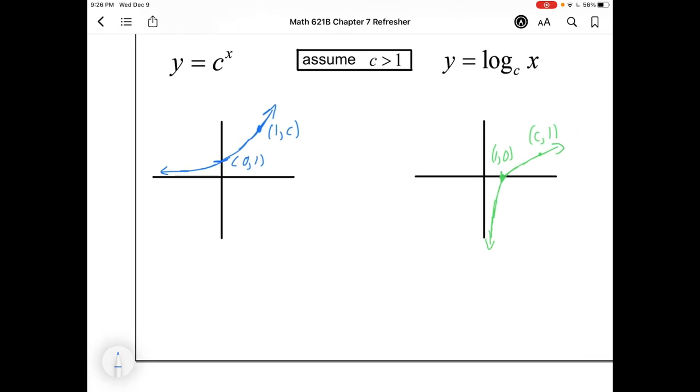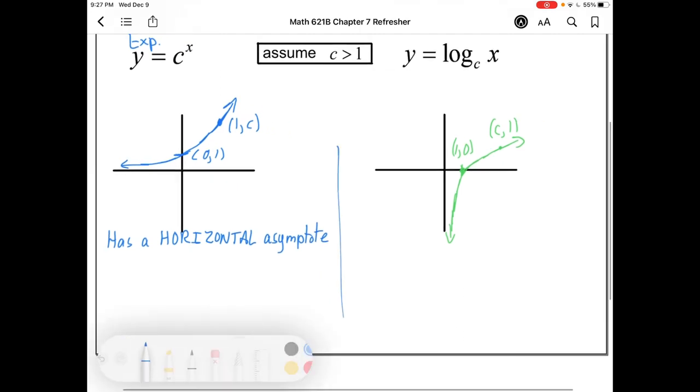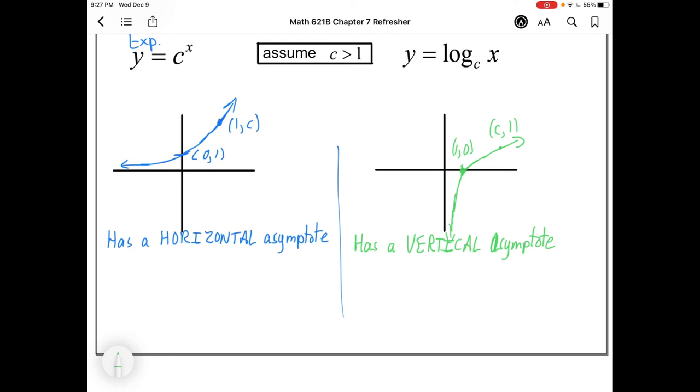The exponential graph, so obviously that would be this one here, right, that has c to the x, exponential. It has a horizontal asymptote. The log graph, which has the big log in it over here, it has a vertical asymptote.